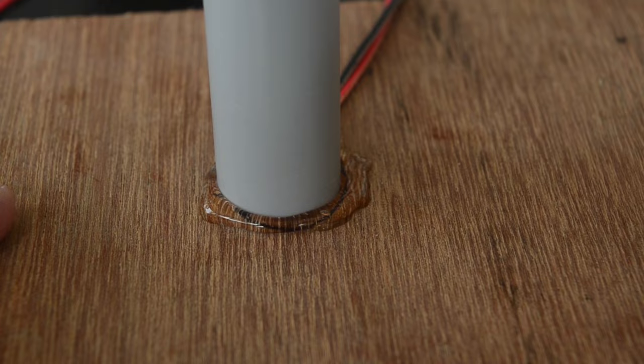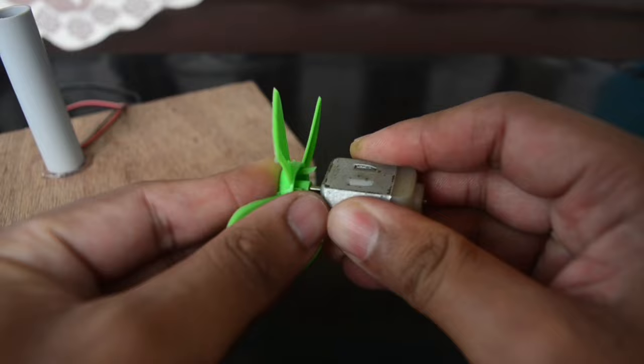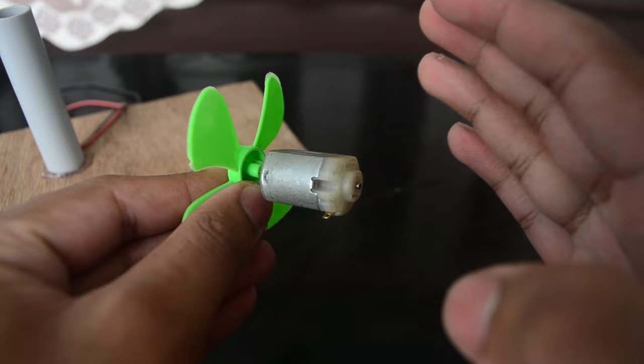After that we'll take a small DC motor and a propeller and connect them together. These things are easily available on Flipkart and Amazon. If you want you can purchase them from the link in the description.